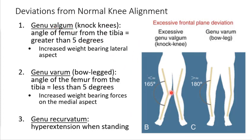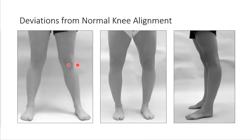Genu valgum, sometimes referred to as knock knees, is when it's greater than about 10 degrees — instead of 175 degrees off the 180, you'd be at 165. Bowlegged individuals have a varus condition with a lot of space between the knees — sometimes they're just naturally bowlegged or have some mechanical or spinal aspect creating that position. Those are frontal plane deviations. In the sagittal plane, about five degrees of hyperextension is normal; beyond that you start to get hyperextension deformities.